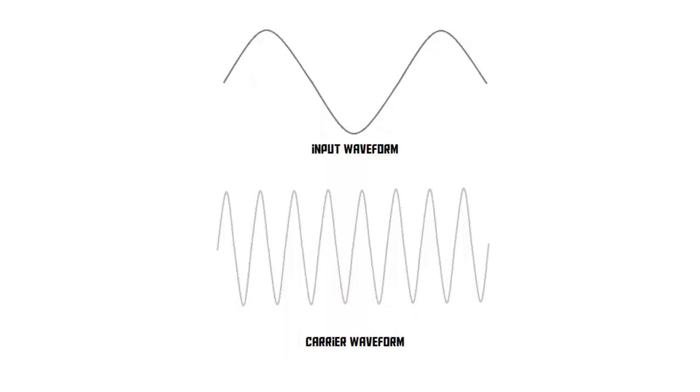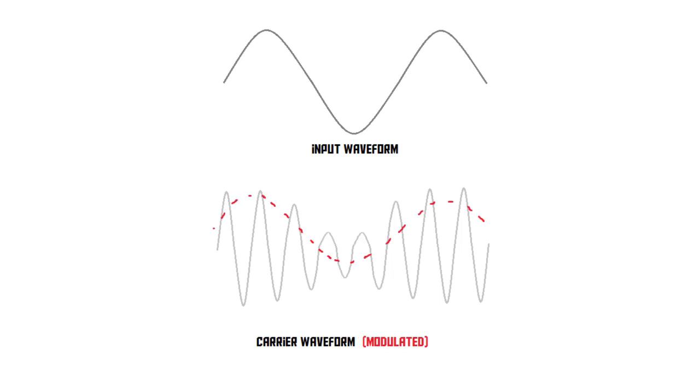A very common type of modulation is amplitude modulation. What amplitude modulation does is adjust the amplitude of a specific radio signal in order to get the information across. You have your carrier wave, your radio signal, and then, for example, an audio signal that you want to send to the other side. With amplitude modulation, you adjust the amplitude with the input signal, and the receiver will then demodulate this back into the original audio signal.